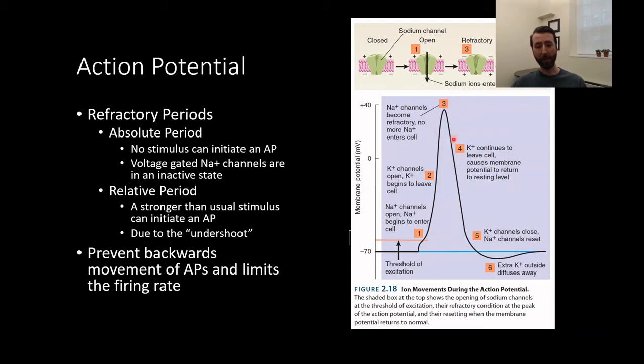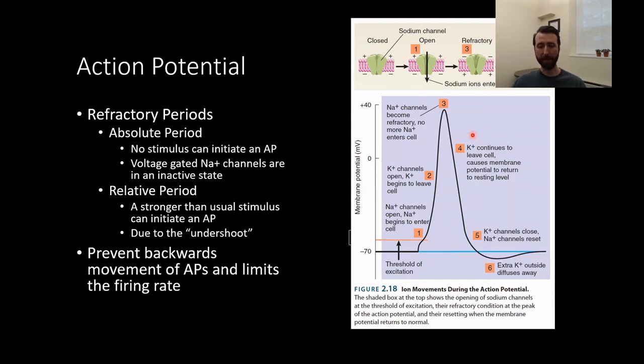The absolute refractory period prevents the backward movement of action potentials. So you don't have these voltage-gated sodium channels opening, going back and forth forever because it can only move in one direction. Action potential starts at the axon hillock, moves down to the terminals, and they only go that one way. It also limits the firing rate. Neurons can only fire so quickly because of this absolute refractory period. They can only fire as fast as the sodium channels can reset.